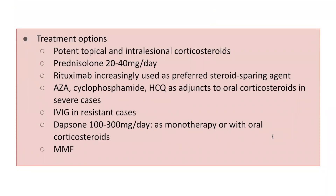Because Pemphigus is caused by pathogenic autoantibodies, targeted therapy must be designed to reduce autoantibody production, not just suppress local inflammation. The initial step is potent topical and possibly intralesional corticosteroids for localized lesions; otherwise, systemic therapy with prednisone 20–40 mg/day is used. Rituximab is increasingly the preferred steroid-sparing agent — a biologic targeting CD20 that suppresses B cell antibody production. Other steroid-sparing agents include azathioprine, cyclophosphamide, and hydroxychloroquine. For resistant cases, IVIG, dapsone, and mycophenolate mofetil are additional options.